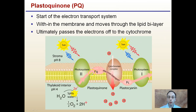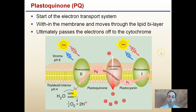Plastoquinone, represented as PQ, is a mobile protein and the start of the electron transport system. It moves within the membrane — within this lipid bilayer — and passes electrons off to the next step. We excite our electron and pass it to this mobile carrier, which carries the high-energy electron forward. Without this carrier, the electron would just release its energy randomly and it could not be captured and utilized for the photosynthetic process.